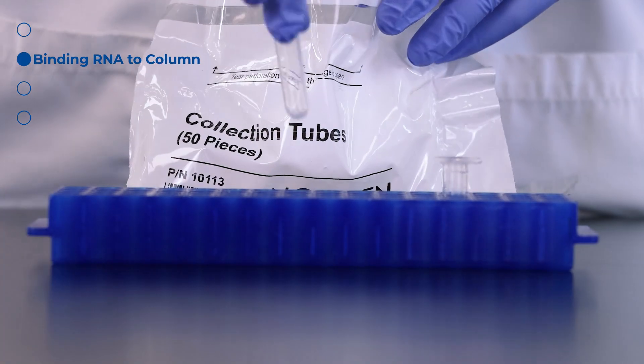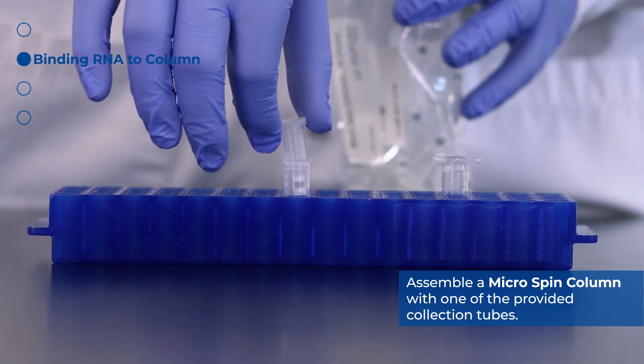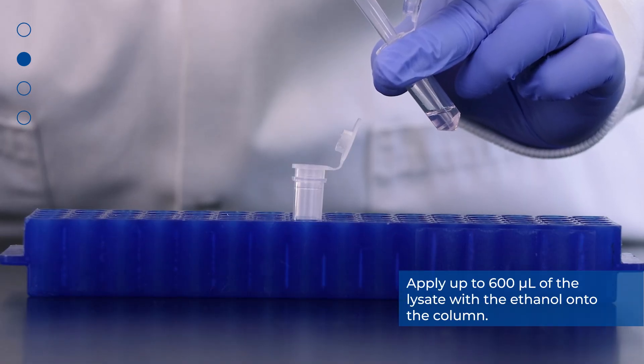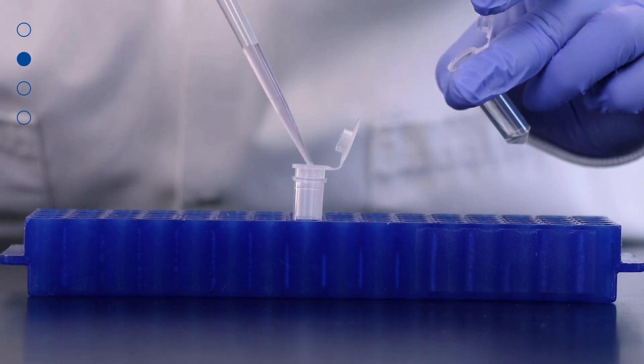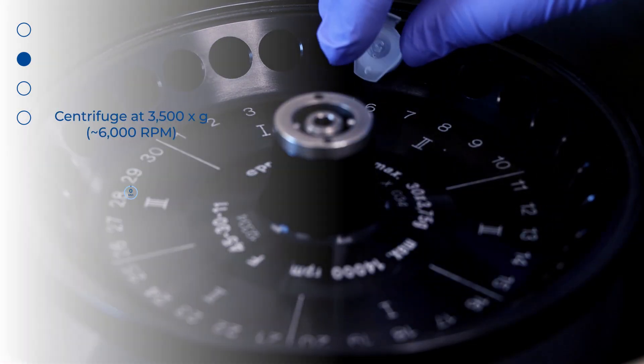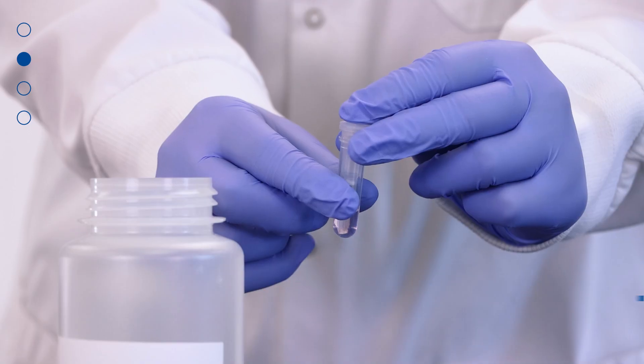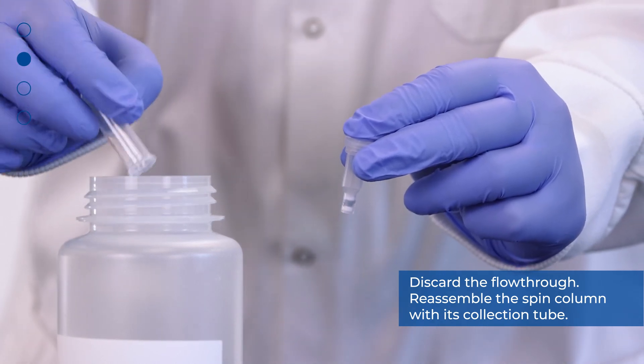Next, bind the RNA to the column. Assemble a micro-spin column with one of the provided collection tubes. Apply up to 600 microliters of the lysate with the ethanol from the previous step onto the column and centrifuge for 1 minute at 3500 g or 6000 rpm. Discard the flow-through and reassemble the spin column with its collection tube.